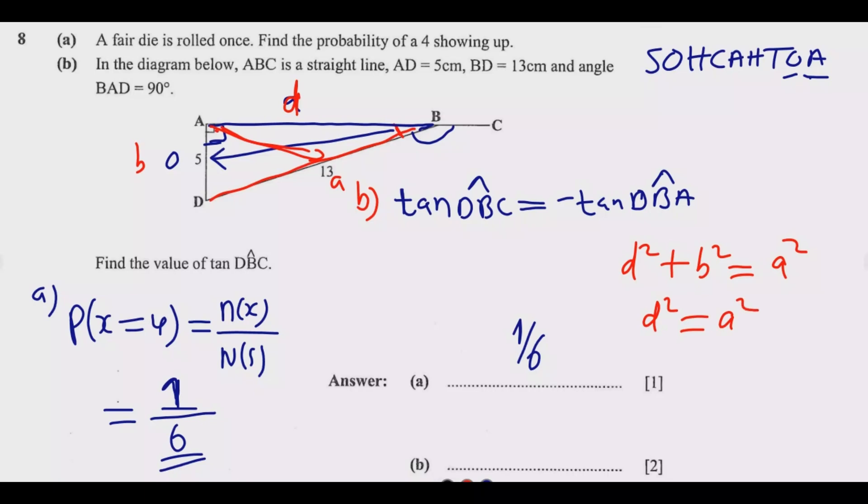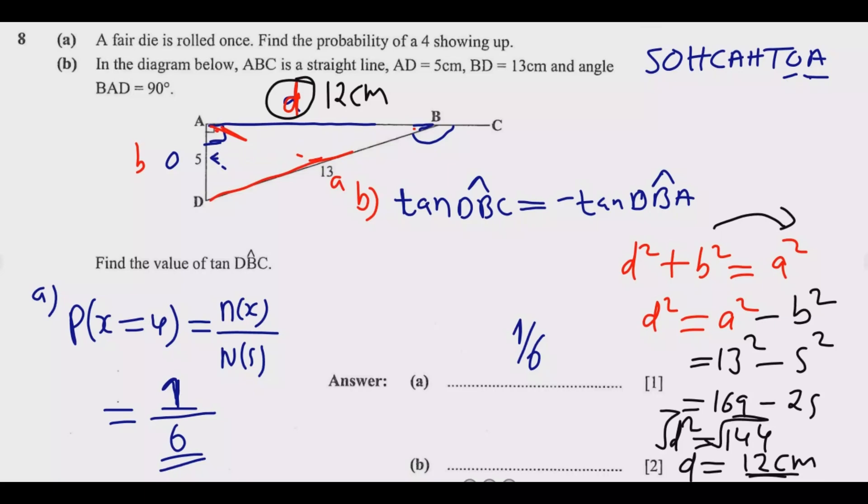To find d: d squared plus the opposite which is a squared equals c squared. So to find d, d squared is equal to a squared minus b squared. So substituting, we have 13 squared minus 5 squared, so we have 169 minus 25 which is 144. This is d squared, so to find d we just find the square root. Since it's positive this is 12 centimeters. So now we found this to be 12 centimeters.